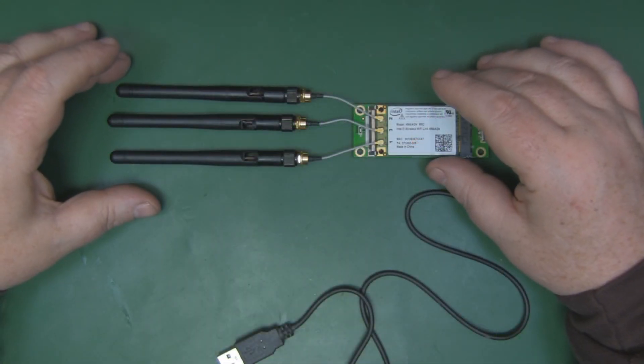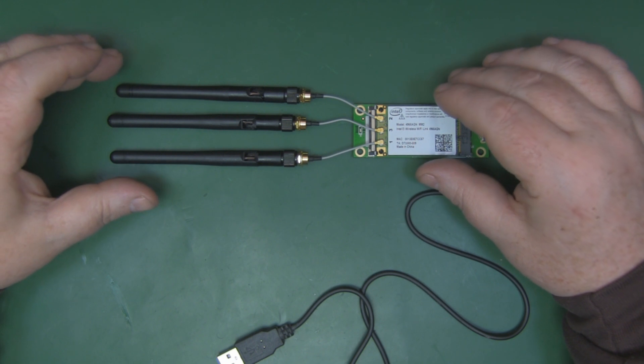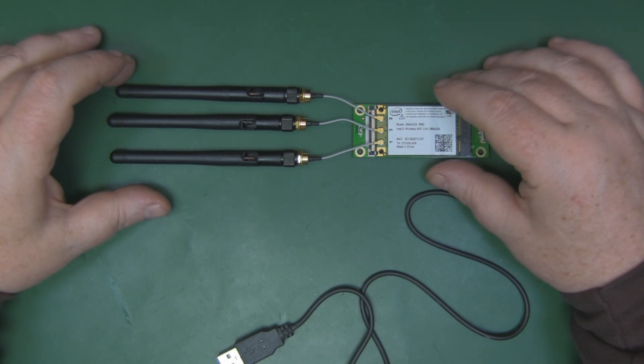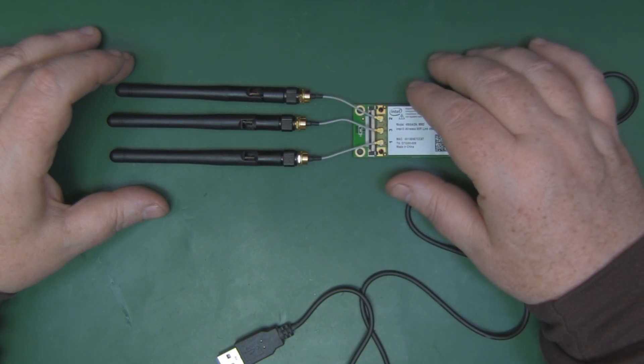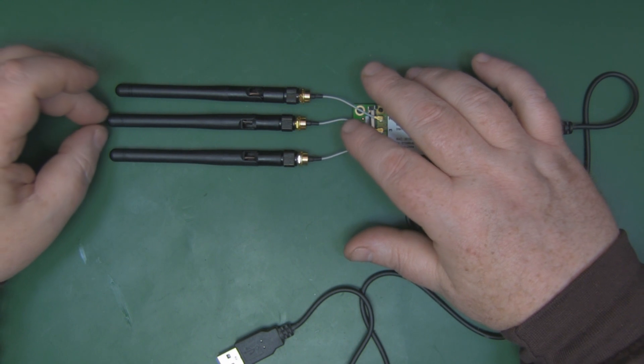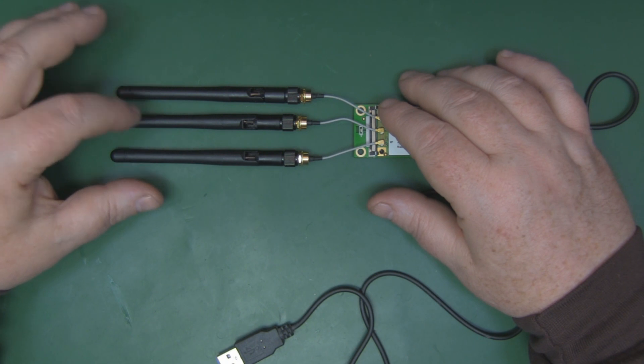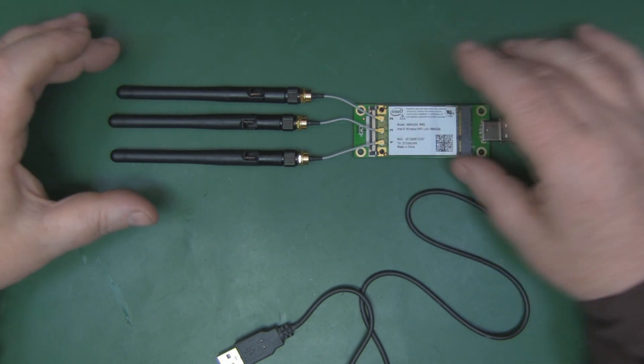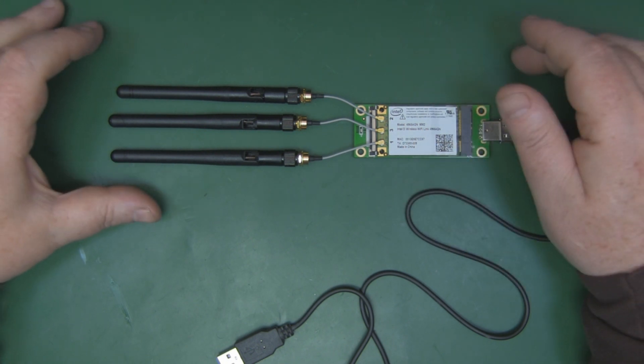As you saw in that scan of the Linksys antenna, it performed really badly. As a benchmark to test against, I'm going to do a second scan now with three little rubberized dipole antennas - cheap ones off eBay, around 2.5 dBi in gain each, so they're only small. We'll do a scan with the same Wi-Fi card and setup and see how well these actually perform.